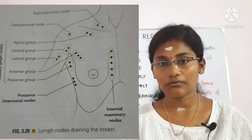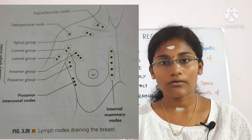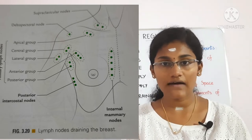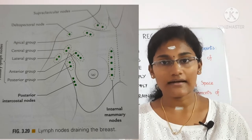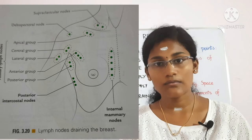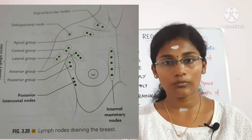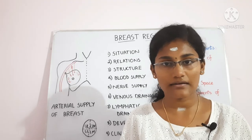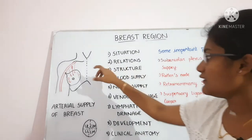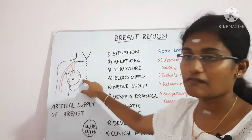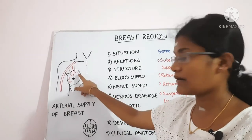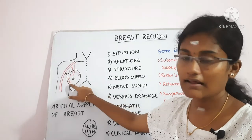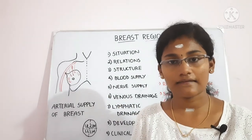The axillary group of lymph nodes is further divided into five subgroups: anterior, posterior, lateral, apical, and central. The internal mammary lymph nodes follow the internal mammary artery. The posterior intercostal lymph nodes are present near the posterior intercostal arteries. The axillary lymph nodes are also present in this region.